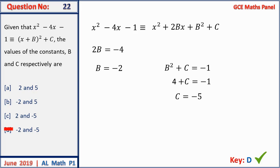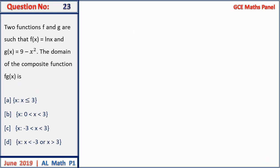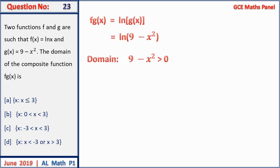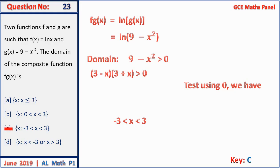Question 23: f(x) = ln x and g(x) = 9 − x². The composite function f(g(x)) = ln(9 − x²). The domain requires 9 − x² > 0, i.e., (3 − x)(3 + x) > 0. Testing with the number line, the solution is −3 < x < 3. Answer C.